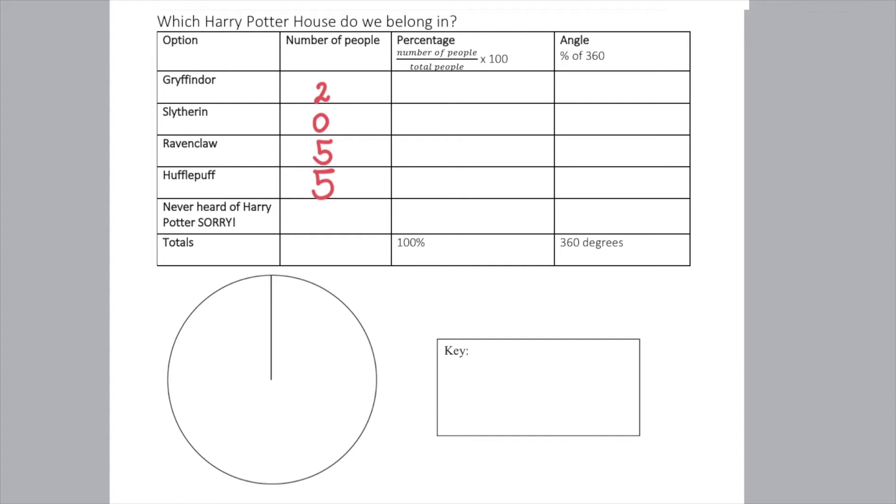The students picked which Harry Potter house they belong in. We've got 2 in Gryffindor, no one in Slytherin, 5 in Ravenclaw, 5 in Hufflepuff, and a whopping 11 who have never heard of Harry Potter. All together, how many students in my class took this survey? We have 23. I added all of these numbers together.